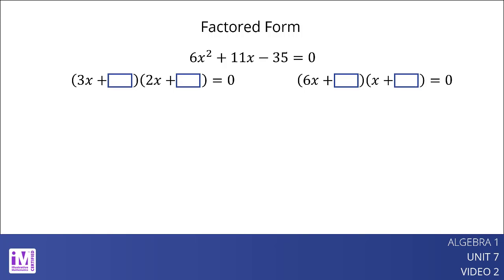The second number in each factor will be factors of negative 35. But will they be negative 5 and 7, 5 and negative 7, 35 and negative 1, or negative 35 and 1, and in which order? After some guessing and checking, we find the right factors and can proceed to solve using the zero product property as shown here.